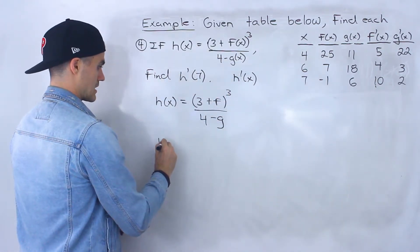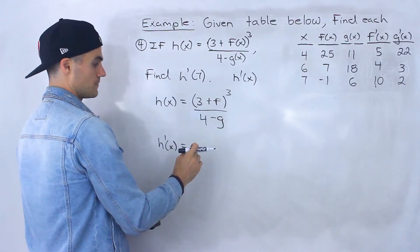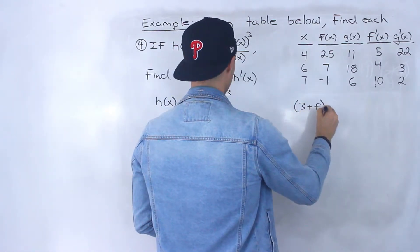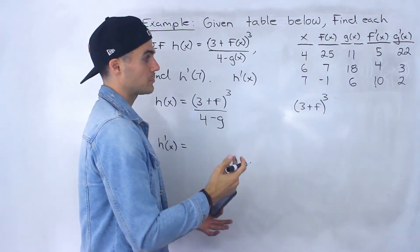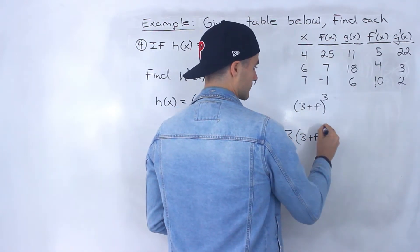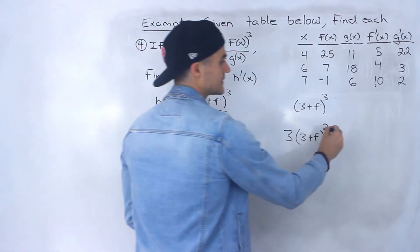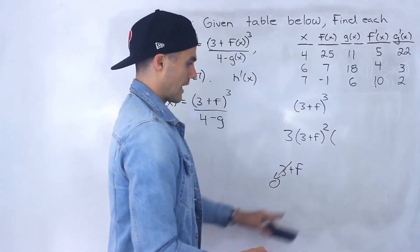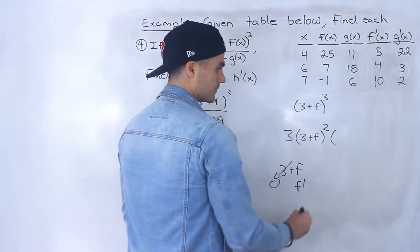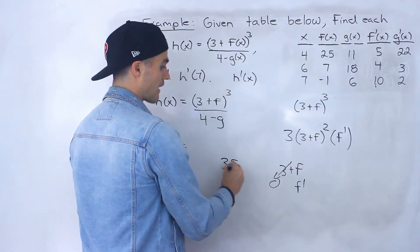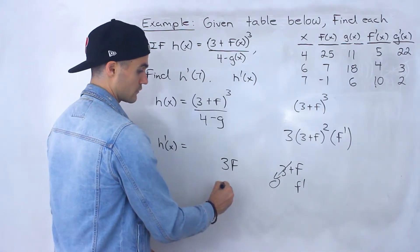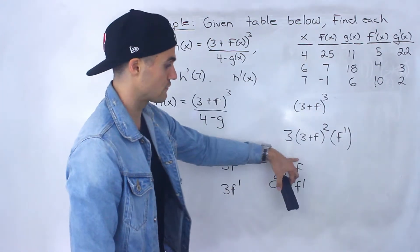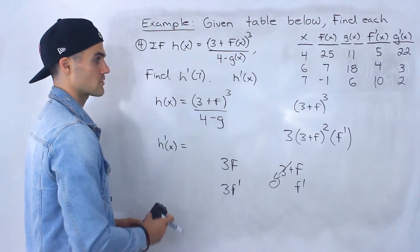Let's find the derivative using the quotient rule. We find the derivative of the numerator: for 3 plus f to the power of 3, we apply the chain rule — bring the 3 down, keep the inside the same, subtract 1 from the exponent, then multiply by the derivative of the inside function, which is 3 plus f. The derivative of 3 is 0 and the derivative of f is f prime. Note: if it were 3f, the derivative would be 3f prime, but since it's 3 plus f, the 3 differentiates separately to 0.